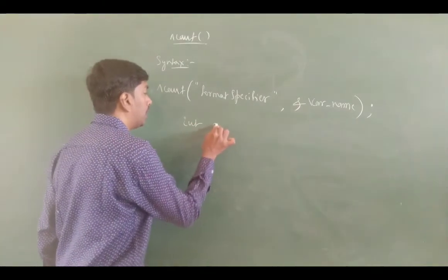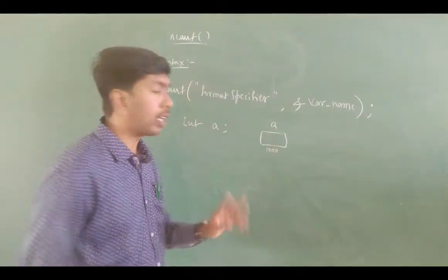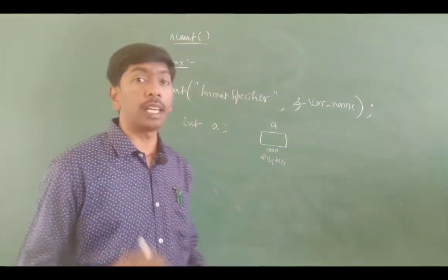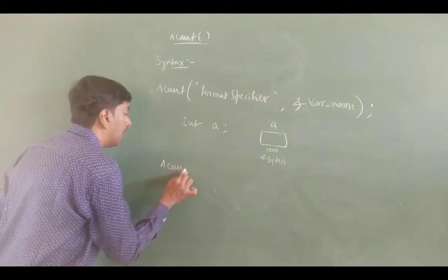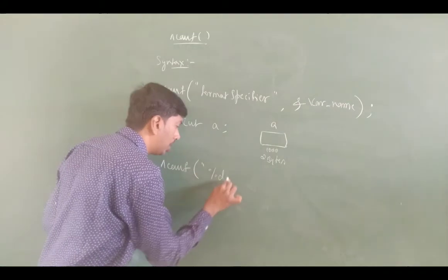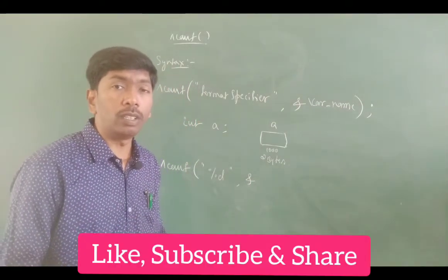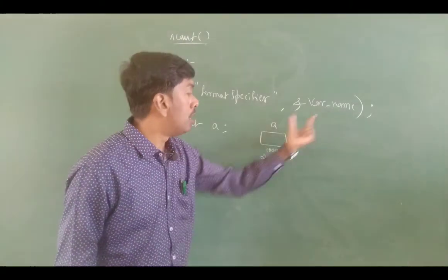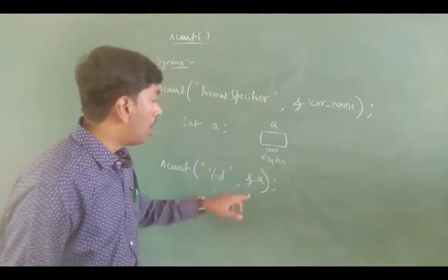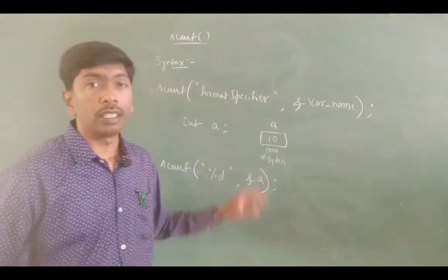For example, integer A creates a memory block with address 1000, 2 bytes memory block allocation. The user enters a number and it is read using scanf. We write: scanf("%d", &A). The ampersand means address — A's address is 1000. So the value 10 entered by the user is stored at address 1000.